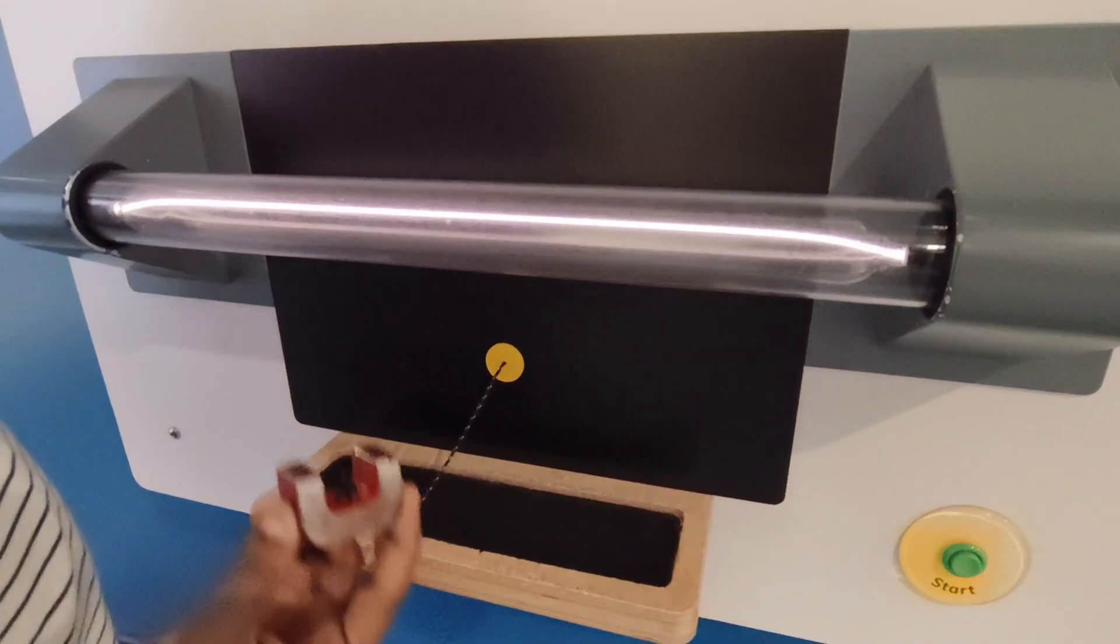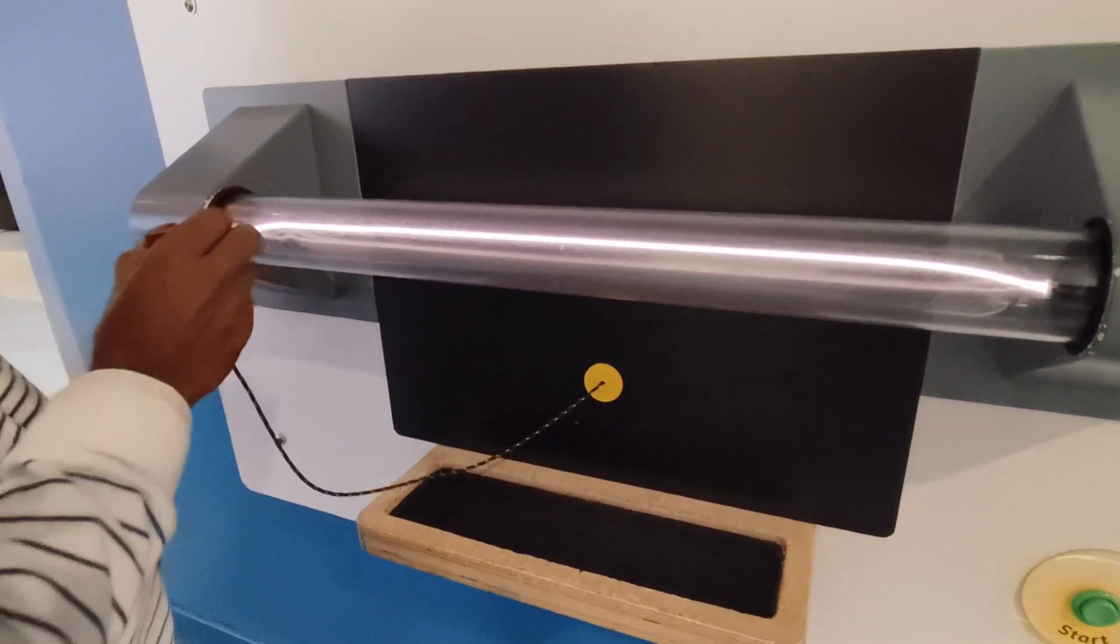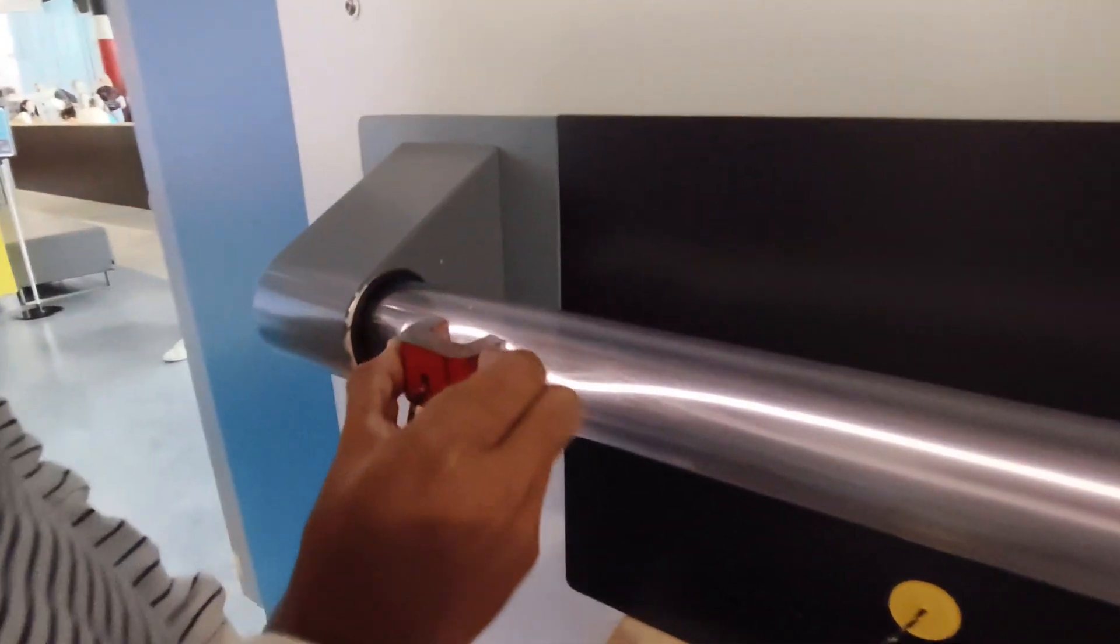If I show this magnet, you can observe the deflection of electrons. Look, the electron is deflecting.